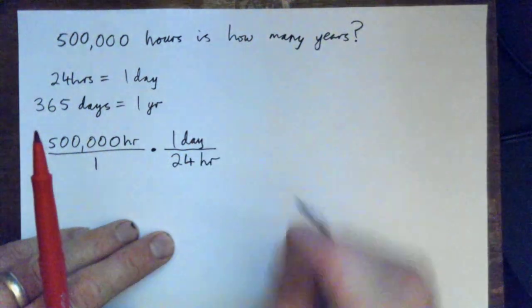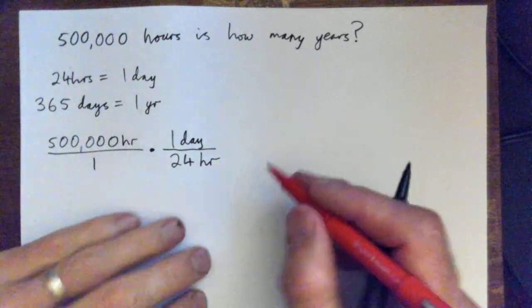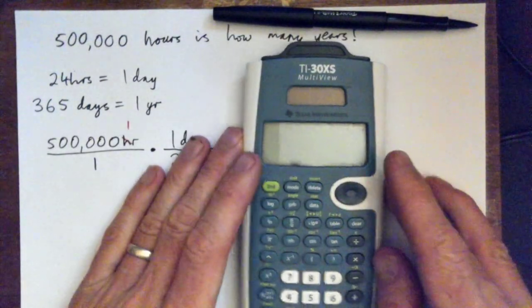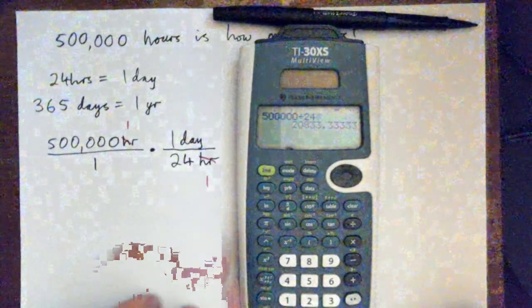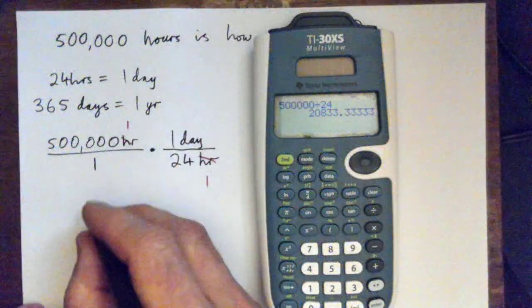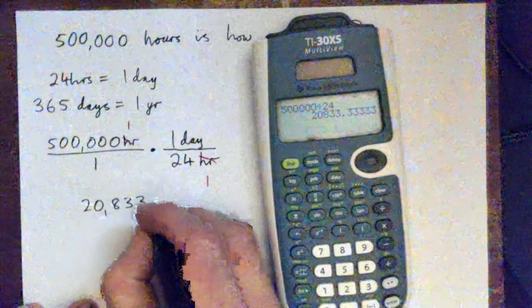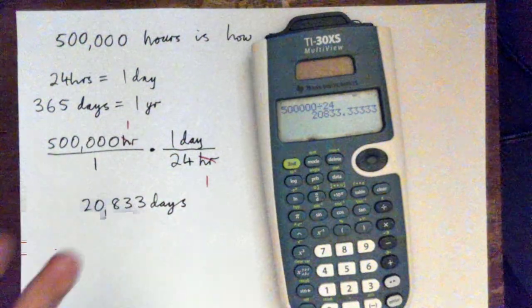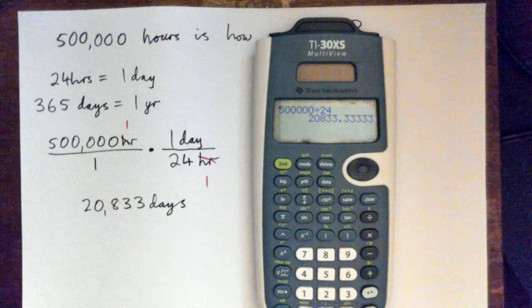And now the hours are going to cross cancel like that. And by the way, I'm just going to take my calculator out and do 500,000 divided by 24, and that gives me 20,833. So just by doing this part, we find that 500,000 hours is the same thing as 20,833 days. Does that make sense? So we've converted it to days already just by doing that, or really just by dividing by 24.